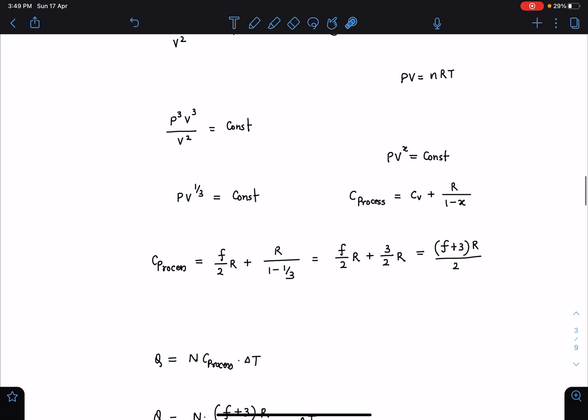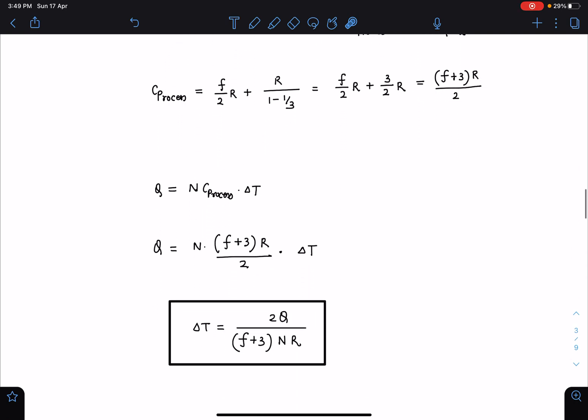C process is known to you now. I can finally use that Q equals N C process delta T, and delta T I can calculate from here, which will be 2Q divided by (f + 3) N R. And this is going to be the final answer for this problem.